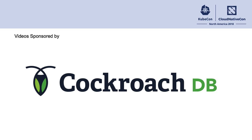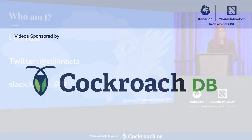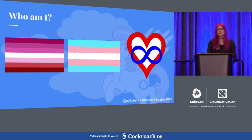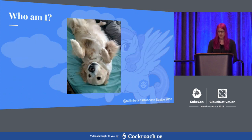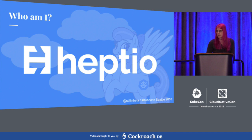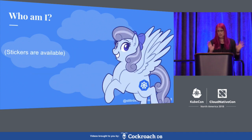Hello, everybody. Thank you for staying till the end. My name is Liz Frost. I'm still in beta on Twitter, and if you want to find me on the Kube Slack, I am just Liz. I am a queer, trans, and polyamorous woman. I am a co-mom to a very cute and very fuzzy dog — if you follow me on Twitter, you're mostly going to get pictures of Flurry. I work for a company called Heptio, which as of right now is still an independent company but is soon to be a part of VMware. And perhaps most importantly to all of y'all, I created the Kubernetes Cube Cuddle Pony. Stickers are still available — come find me afterwards.